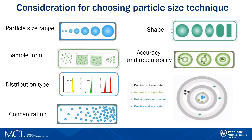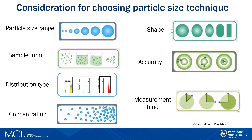Another criterion is accuracy and precision. Ensemble techniques can be very precise but not accurate because of the assumed model parameters. Automated imaging can be very accurate since no models are involved and we directly observe the particles. However, it may be difficult to get reproducible results because of variations in sample dispersion or the choice of selected area. The last but not least criterion is measurement time.